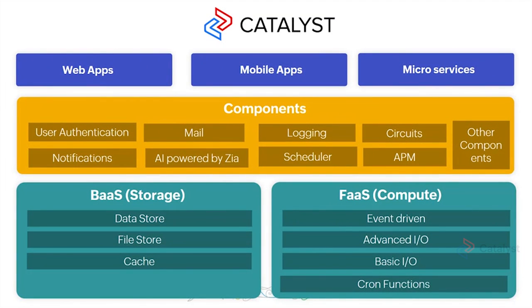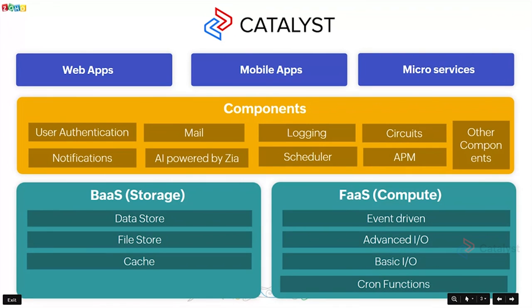This is just a refresh for people who have already seen it — I've had this slide continued across the last two sessions as well, just to give you an idea that Catalyst can be used to build web apps, mobile apps, and microservices. We offer backend as a service for storage functionality and function as a service for compute functionality in a modular way. Along with these two, we also offer a whole list of different components which function in the serverless scheme — essentially, you pay for whatever you use. Within these components you would see AI powered by Zia, user authentication, APM, and other components we're going to be looking at in this session.